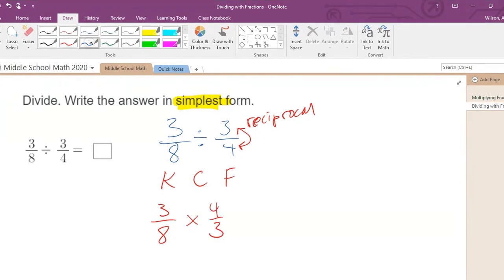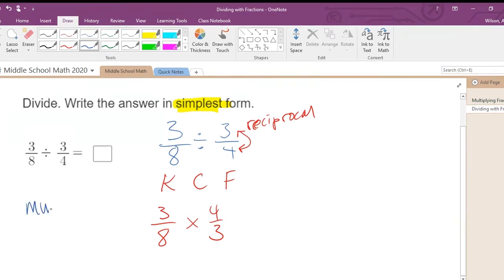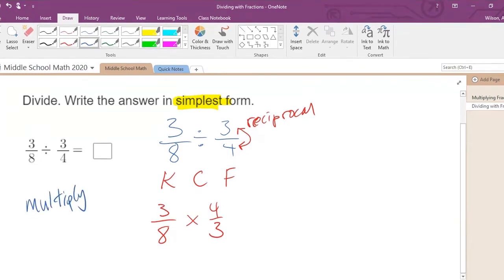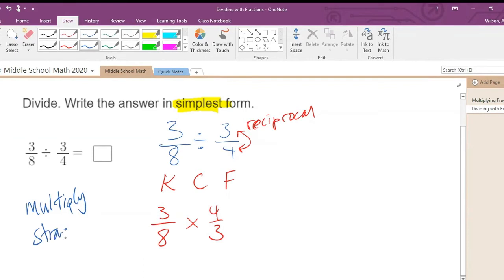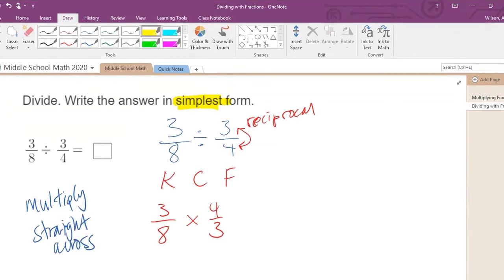So now you're staring at a problem that's turned into multiplying fractions. And you should remember that in order to multiply fractions, you just simply go straight across. What I mean by straight across is you just multiply numerators by numerators, denominators by denominators.